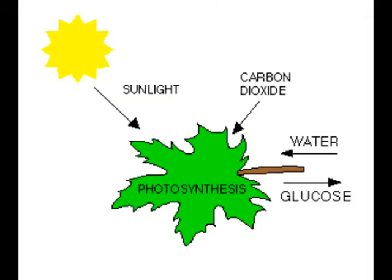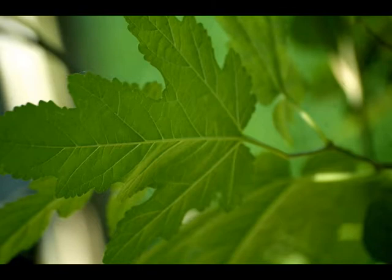All during spring and summer, the leaves serve as factories where most of the foods necessary for the tree's growth are manufactured. This food-making process takes place in the leaf, in numerous cells containing the pigment chlorophyll, which gives the leaf its green color.